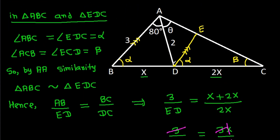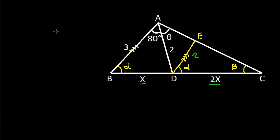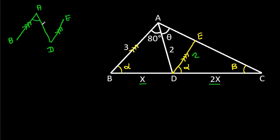We get ED is 2. Now, we know that AB and DE are parallel, so these two angles will be equal. This angle is 80 degrees, so this angle — angle ADE — will also be 80 degrees.